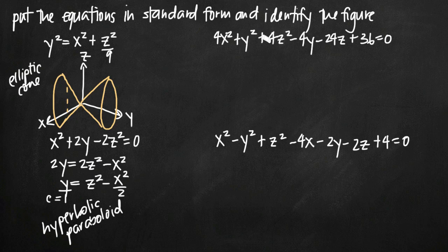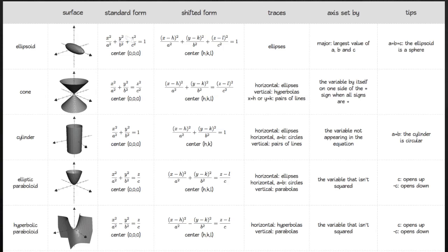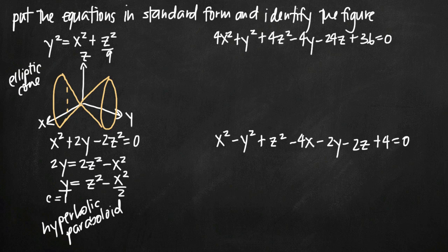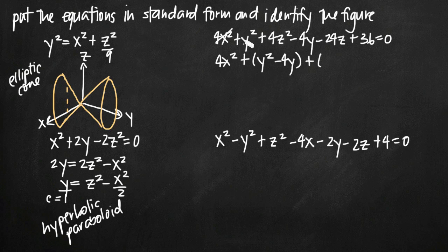For the third equation, all the standard forms on my chart have x variables grouped together, y variables grouped together, and z variables grouped together. So I should group my x variables together, my y variables together, my z variables together, and possibly complete the square. I have 4x squared, then y squared minus 4y, then 4z squared minus 24z, and then a constant of positive 36 on the right.